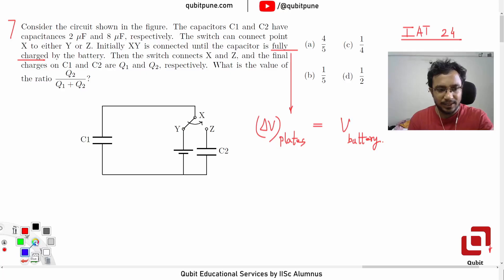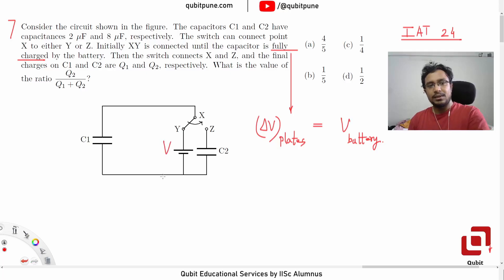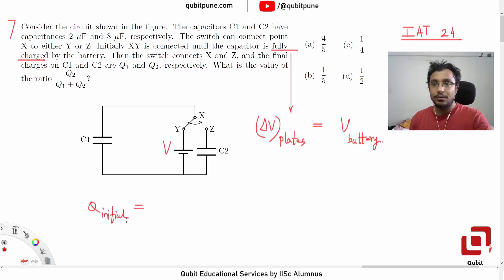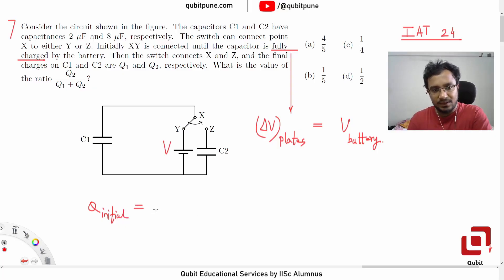Let's assume that the battery has potential V. How much will Q_initial be? Q_initial equals C1 into V.